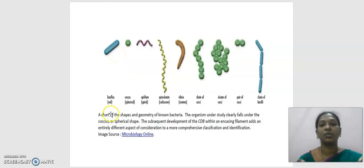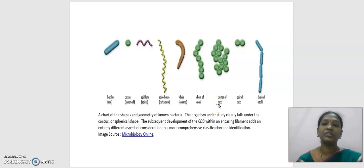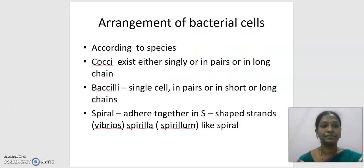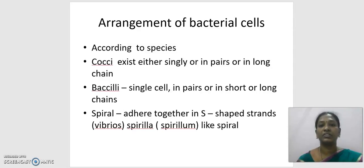Bacteria can be in singular form or joined together to form different shapes. When in a chain, they are called a chain of cocci; in a cluster like a bunch of grapes, they are a cluster of cocci; if only two are present, they are a pair of cocci. For bacillus species arranged in a chain, they are called a chain of bacillus. The spiral bacteria come together in S-shaped strands called spirillum.